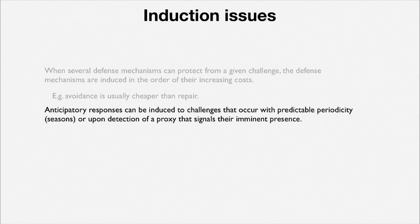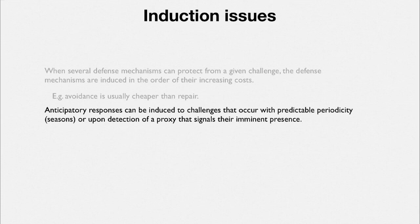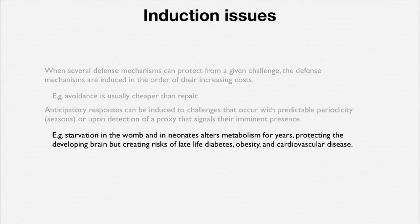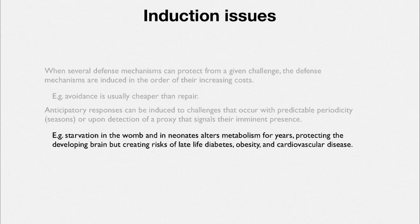Anticipatory responses can be induced to a challenge that occurs with predictable periodicity. If something is coming up seasonally, physiology can be prepared for that. We all undergo yearly fluctuations in our weight — we tend to get heavier in the winter and lighter in the summer — related to thermal regulation. We can also detect a proxy that will signal the upcoming arrival of some threat. For example, starvation in the womb and in neonates alters metabolism for years, protecting the developing brain but creating risks of late-life diabetes, obesity, and cardiovascular disease — what's called the metabolic syndrome.